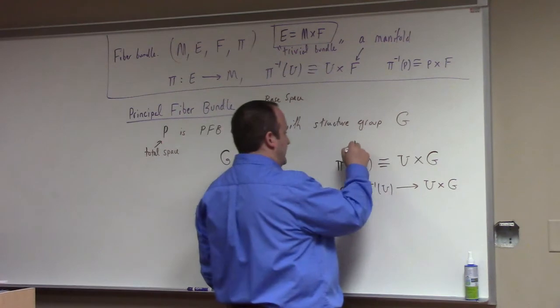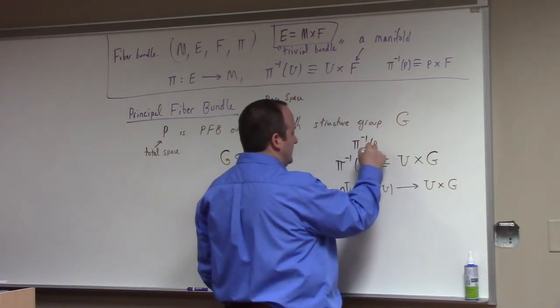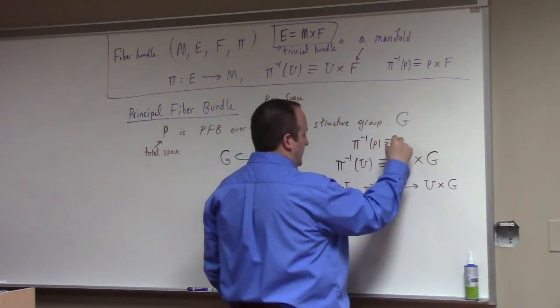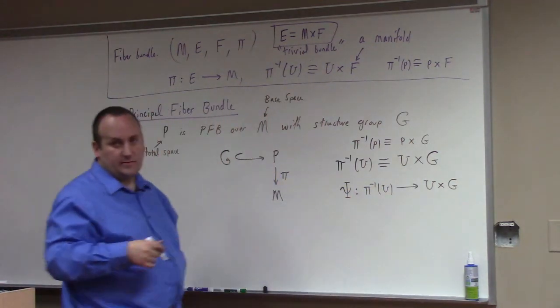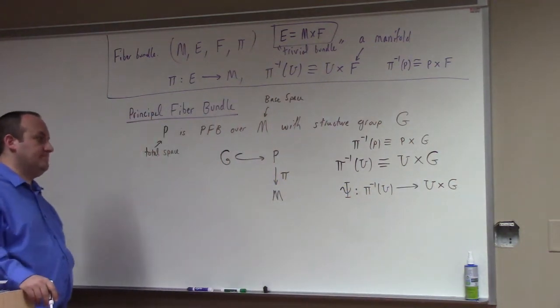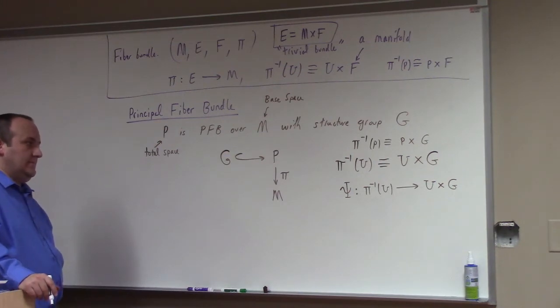It's still also the case that pi inverse of a point is the point Cartesian product with G and it bijectively corresponds to that. In this world we were gluing and we're growing a Lie group at each point in the manifold.